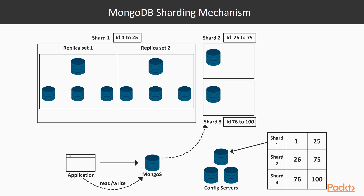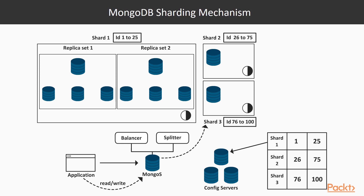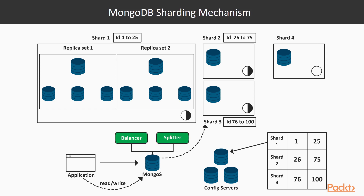There are also concepts like the balancer and splitter involved in the sharding cluster architecture, which make sure that at any given point of time all the shards are equally utilized. Because of this, if you add a new shard to your cluster you don't have to worry about the migration process. The balancer and splitter will identify it as a newly added, underutilized shard and will complete the migration process automatically so that all current shards are equally utilized.